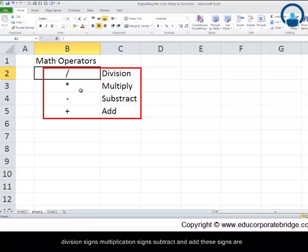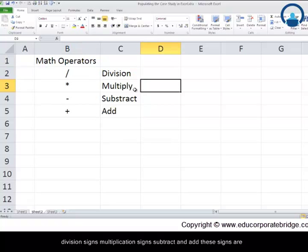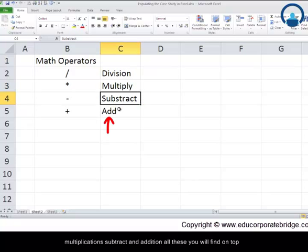These division signs, multiplication signs, subtract and add - these signs are essentially found if you are using a standard keyboard. These will be on the right hand top corner near the num lock. So division, multiplication, subtract and addition all of these you will find on the top right hand corner.